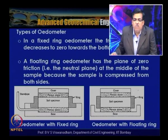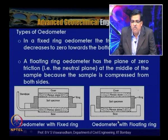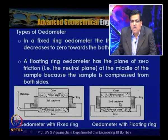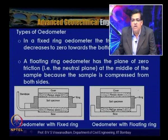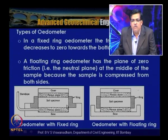In the floating ring oedometer, because the sample is compressed from both sides, the neutral plane (plane of zero friction) is at mid-height of the sample. In the fixed ring oedometer, friction is maximum at the top and decreases to zero at the bottom.